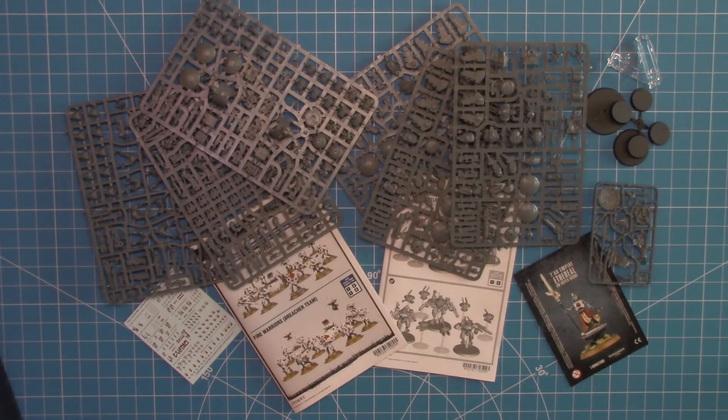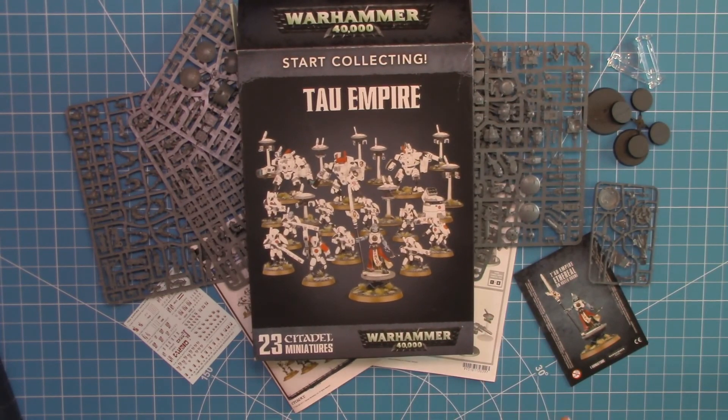Well, that is everything for the Tau Empire Start Collecting set. I hope this unboxing has helped you to determine if this set is something you would be interested in getting for yourself. There's definitely a lot to this. Not only is this a good starter set for your 40K, but if you're also interested in Kill Team, this is a good set to get your Kill Team army going as well. There's a lot of great things in here for that. Well, until next time guys, I'll see you later.